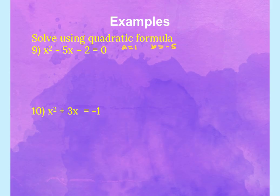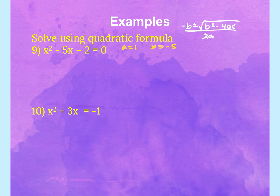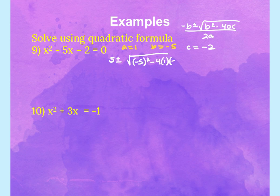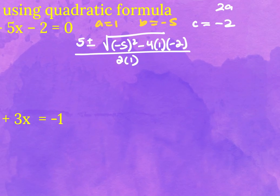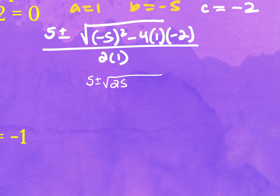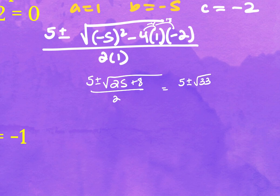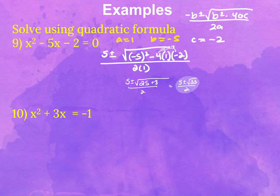For the last two problems, it says use the quadratic formula. For problem nine, a is 1, b is negative 5, and c is negative 2. The quadratic formula is negative b plus and minus the square root of b squared minus 4ac, all over 2a. Negative b is 5, plus and minus the square root of negative 5 squared minus 4 times 1 times negative 2, all over 2 times 1. That simplifies to 5 plus and minus the square root of 25 plus 8, all over 2 — which is 5 plus and minus the square root of 33 over 2. Since 33 only factors to 3 and 11 and neither repeats, you leave it just like that. For the quiz, keep it as a simplified square root, not a decimal.